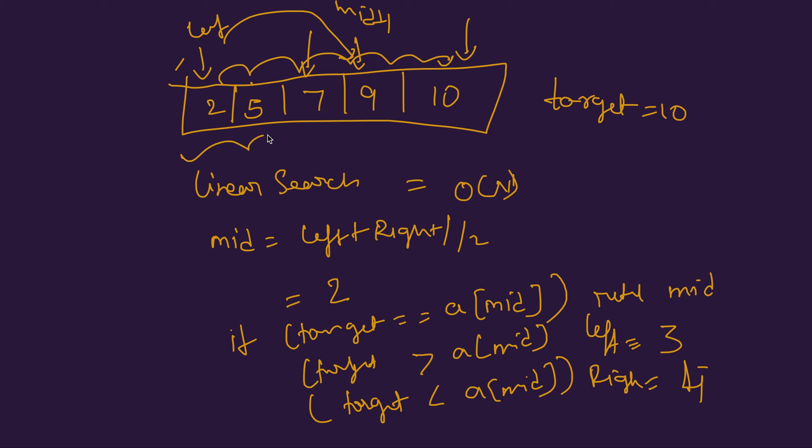If we figured that the target element is greater than the mid, we don't have to look at all these numbers, so we are reducing the time complexity by n by 2 each time. Then we come here and now the mid is at 9.